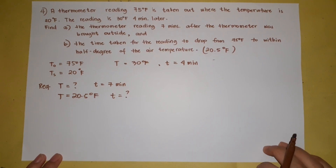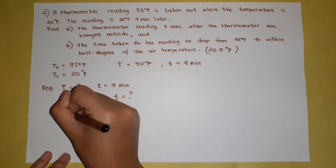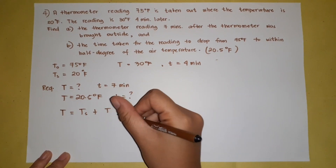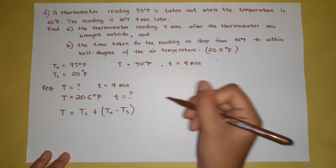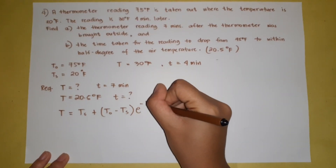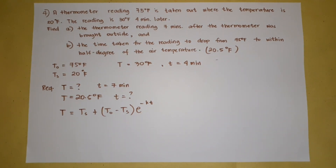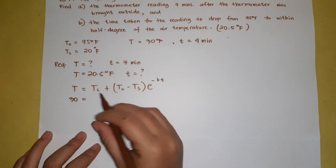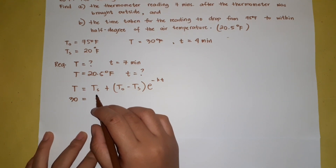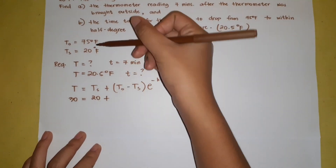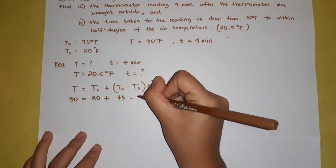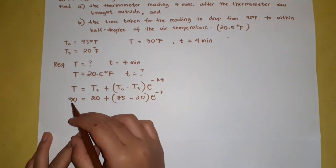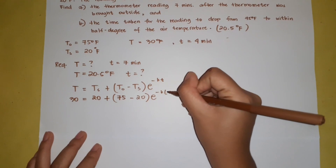We have the formula for Newton's Law of Cooling: T(t) = T_surrounding + (T₀ − T_surrounding) × e^(−kt). First, we will use our given values. Substituting: 30 = 20 + (75 − 20) × e^(−k × 4), where 30°F is the temperature at 4 minutes.